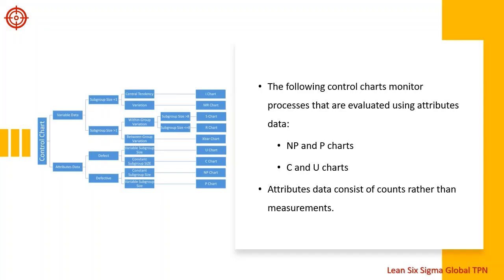To review, we will use attribute control charts to monitor processes that produce attribute data. We will see charts that reflect both in-control and out-of-control processes, and learn how to use these charts to spot unusual sources of variation.